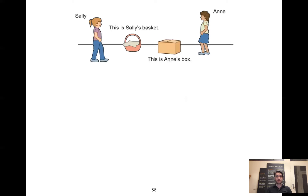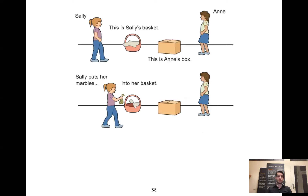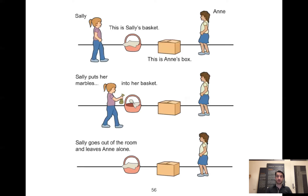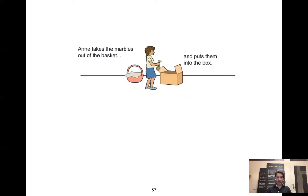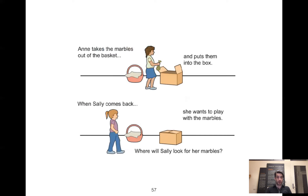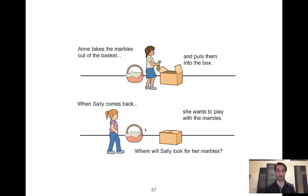This is Sally and this is Sally's basket, and this is Ann and this is Ann's box. Sally puts her marbles into the basket. Sally put her marbles in her own basket. Then Sally goes out of the room and leaves Ann all alone. While Sally is out of the room, Ann takes the marbles out of the basket and puts them into the box. When Sally comes back, where will Sally look for her marbles? Most people are going to say Sally's going to look in the basket, because the last time she was here, she put it in the basket. We know the marbles are in the box, but we know that Sally doesn't know that.